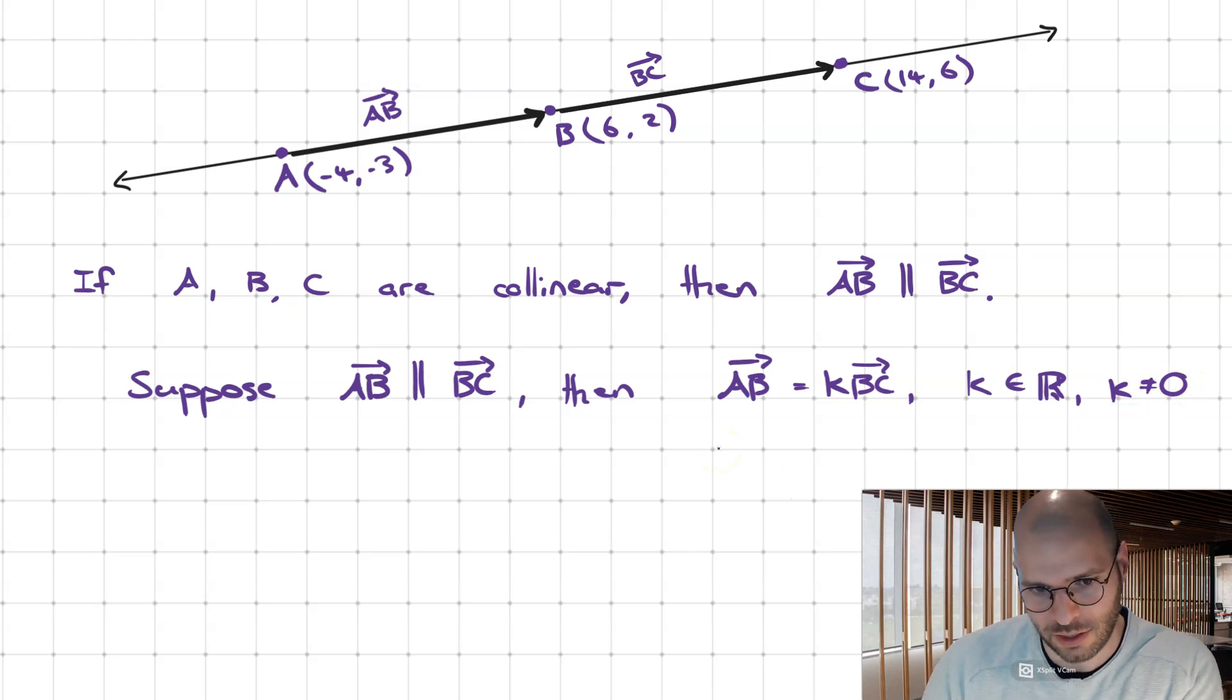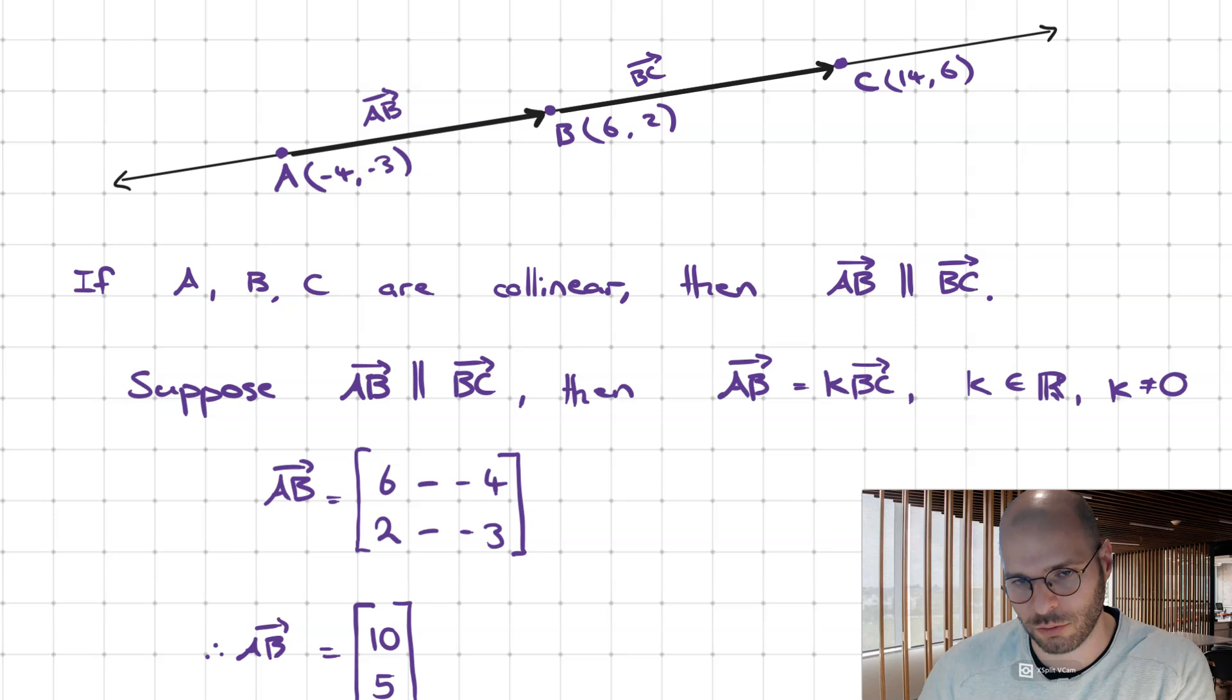From this, let's discover vectors AB and BC. Vector AB is going to be 6 minus negative 4 and 2 minus negative 3. Hence, AB will be 10 and 5.